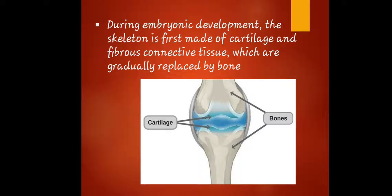When we say cartilage, it is a resilient and smooth elastic tissue. Cartilage is a type of tissue, and since it is elastic, it is a rubber-like padding that covers and protects the ends of long bones at the joints and the nerves. It is also a structural component of the rib cage. Cartilage can also be found in your ear, nose, bronchial tubes, intervertebral discs, and many other body components. That is why cartilage is present at the beginning of embryonic development.